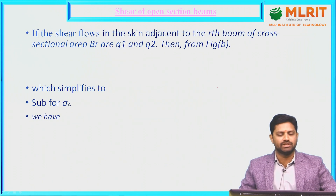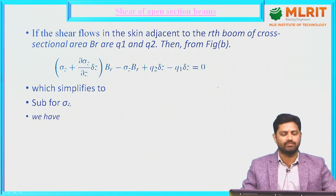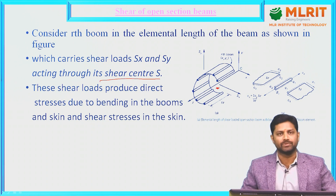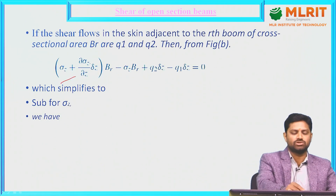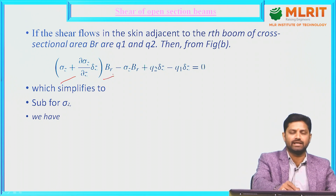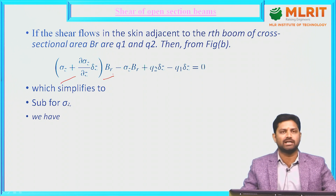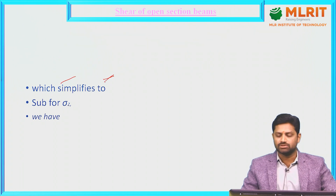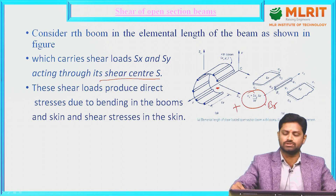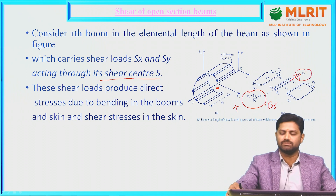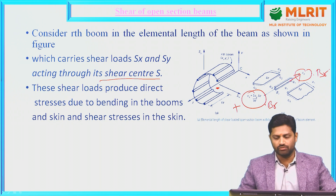The shear loads usually produce direct stresses due to bending in the booms and also shear stresses in the skin. Now, if the shear flows in the adjacent skin to the rth boom of cross-sectional area Br are q1 and q2, then from figure B, considering equilibrium along the length of the boom: σz + (∂σz/∂z)·δz, which is the stress, should be multiplied by the boom area Br. On the other side, the stress is σz, again multiplied by the area Br. That is how we consider the force equilibrium.